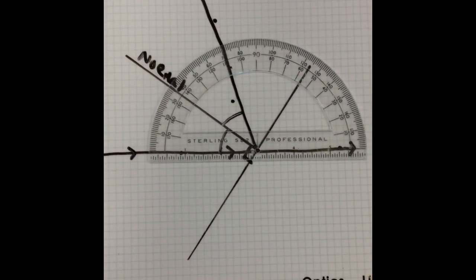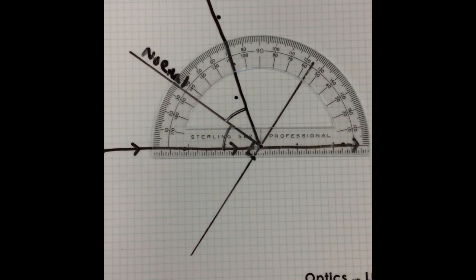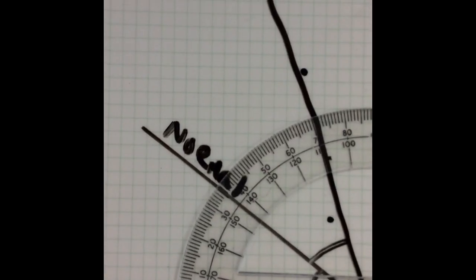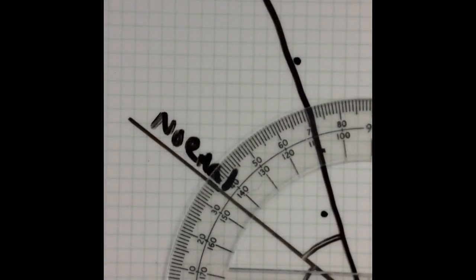Measuring the angle of incidence, that incoming ray going from left to right, it looks as though our angle is about 35 degrees.